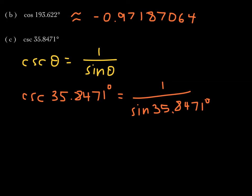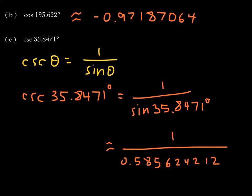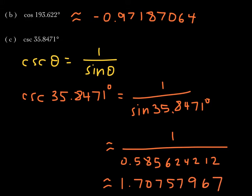My reciprocal button is the x⁻¹ button. Some of you have that button; others have the 1/x button. You can press either one to reciprocate. When I punched in sine of 35.8471 degrees I got a long decimal, and now pressing my reciprocal button gives my final answer: approximately 1.70757967. I hope you found the same result.